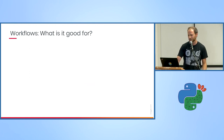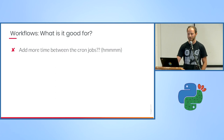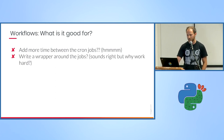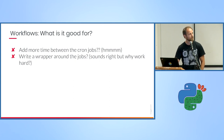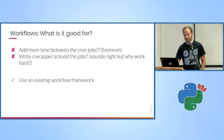What is the best solution for this problem? We can add some more cron time between the jobs, which might help a bit but won't solve all the scenarios. We can write a wrapper on the jobs, which sounds about right, but why work hard when we can use an existing workflow framework?